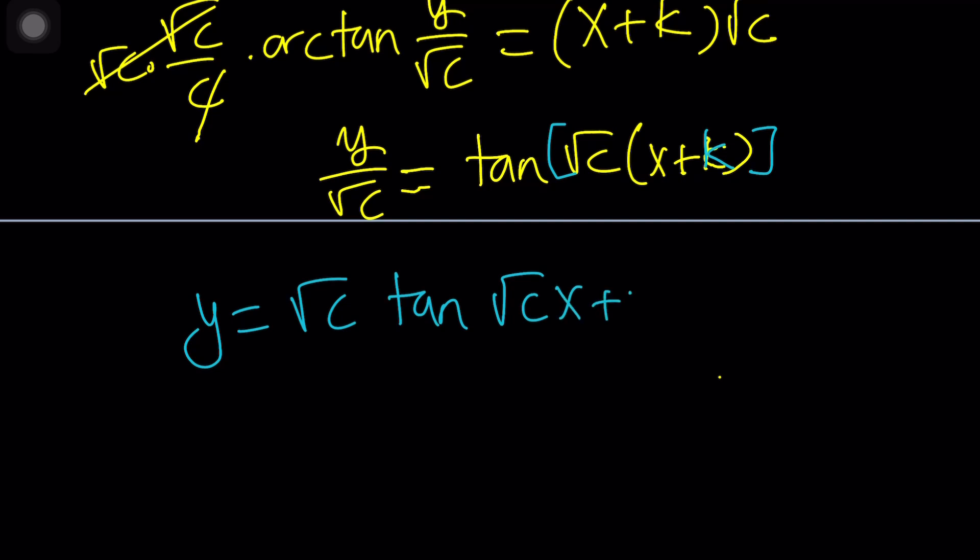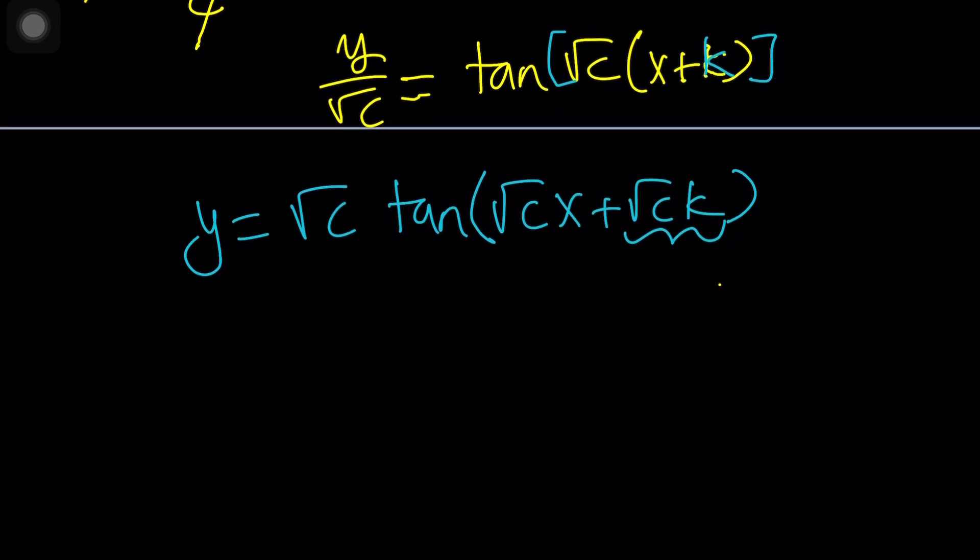And if you want, you can go ahead and distribute the constants. You can even call root c times k another constant. You could also call the square root of c another constant. No big deal. But let's just leave it like this. And go ahead and check out the result from Wolfram Alpha. Let's see if you get something comparable. And Wolfram Alpha tells us something like this. And do you think they are the same?